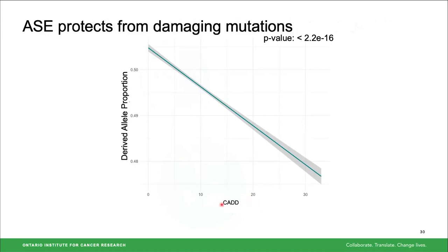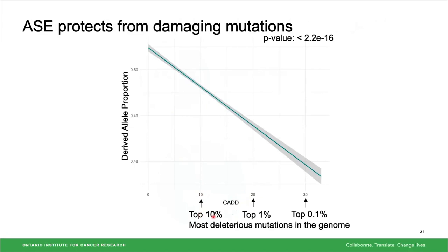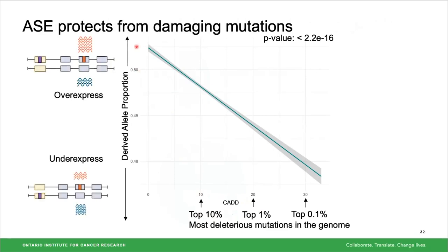On the x-axis I'm showing how deleterious a mutation is, measured by a CADD score: a CADD score of 10 represents the top 10% most deleterious mutations in the genome, 20 is the top 1%, and 30 is the top 0.1%. On the y-axis is the derived allele proportion, where above 0.5 indicates overexpression and below 0.5 indicates underexpression of the derived allele. The linear model shows that at highly deleterious mutations, we see they are often underexpressed — again showing this protective mechanism of ASE.